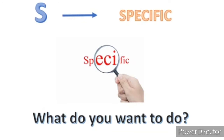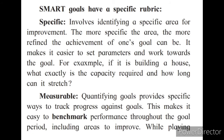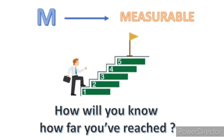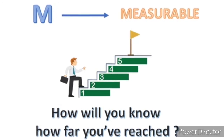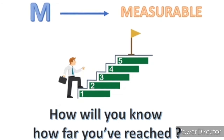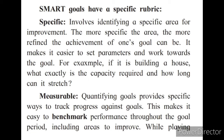Now see the second rubric: Measurable. You have set up your goals and identified a specific area which needs improvement. But how do you know that you are better than before? How do you know that you have improved? That is when measurable comes into account. Quantifying goals is very important to benchmark your performance. For example, while playing football, one's exact role and position has to be clearly defined.